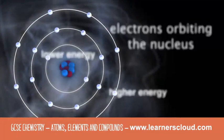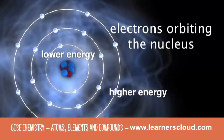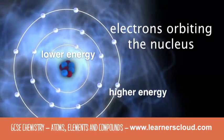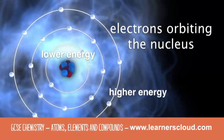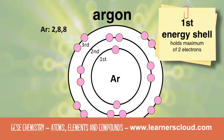The energy shells closer to the nucleus have lower energy compared to the energy shells further away from the nucleus. The first energy shell can always hold a maximum of two electrons.